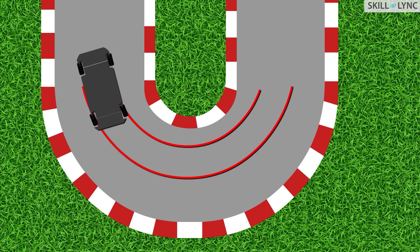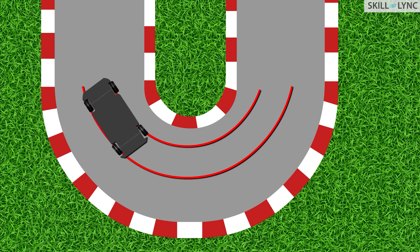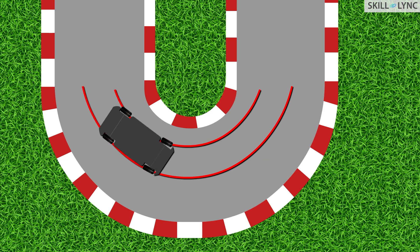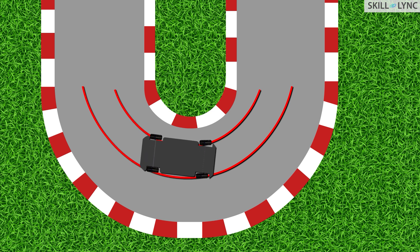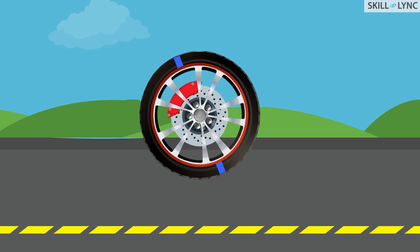Imagine a situation where you're driving a car and you arrive at a sharp turn. To negotiate the turn you rotate your car's steering, which rotates the front wheels of your car in the direction of the turn. To grasp this fully, one should have a good understanding of how a wheel works. Let's take a closer look at how a wheel works now.